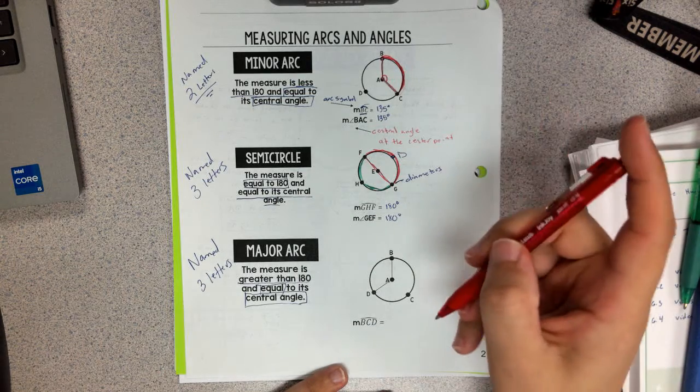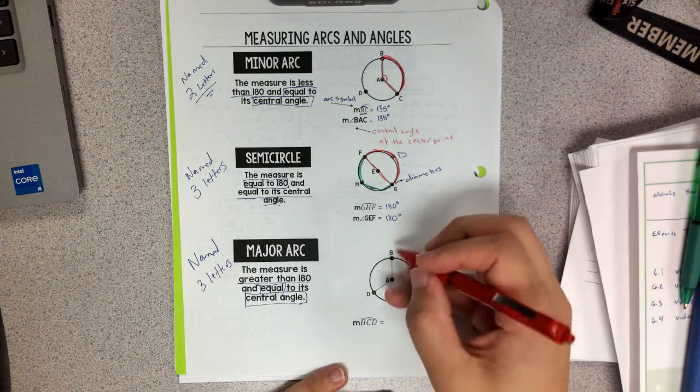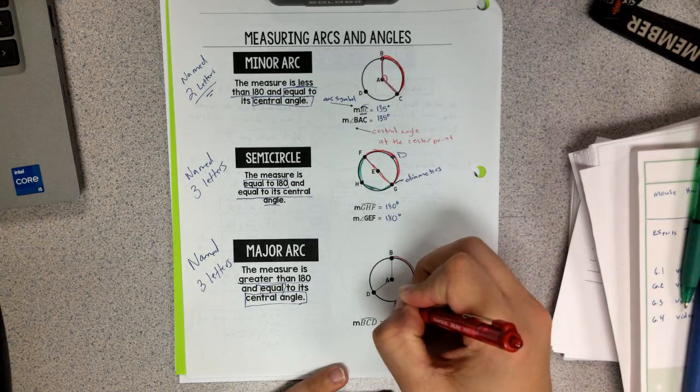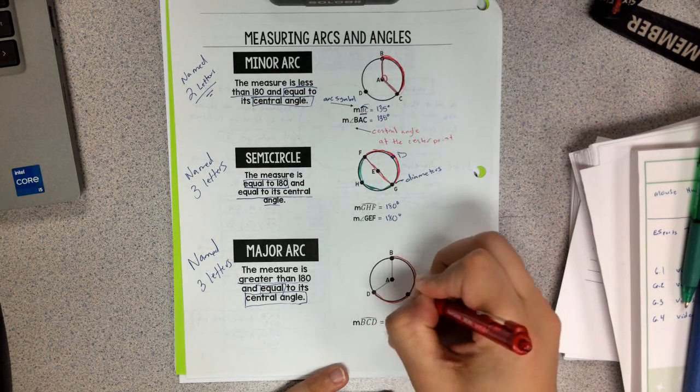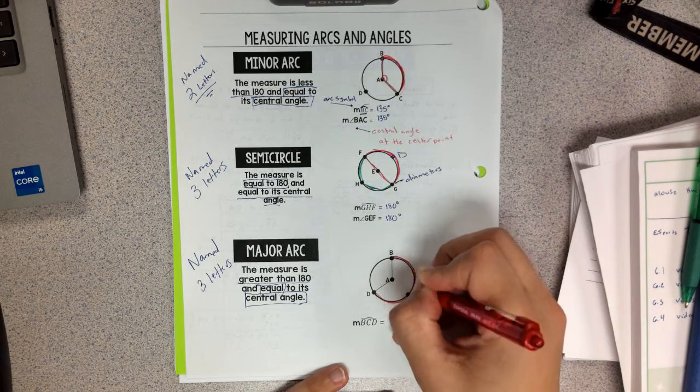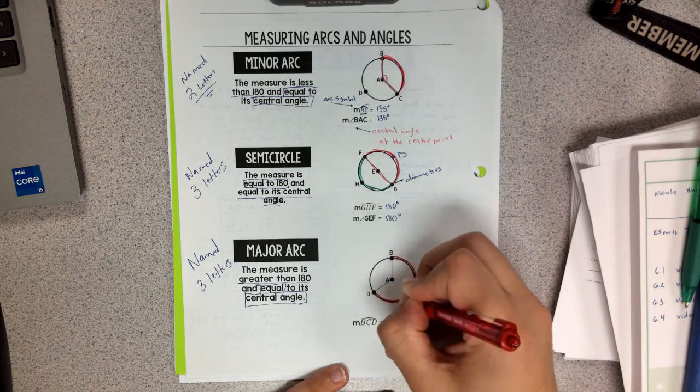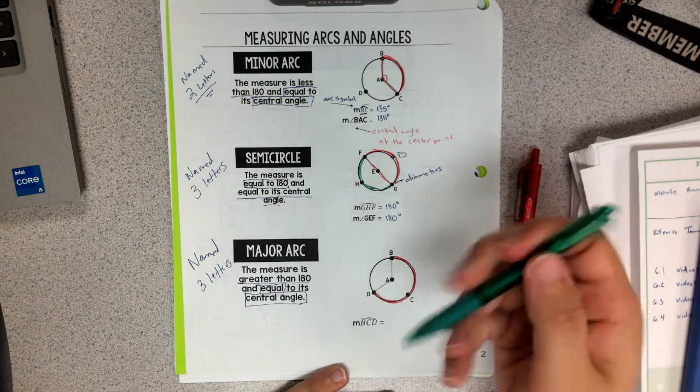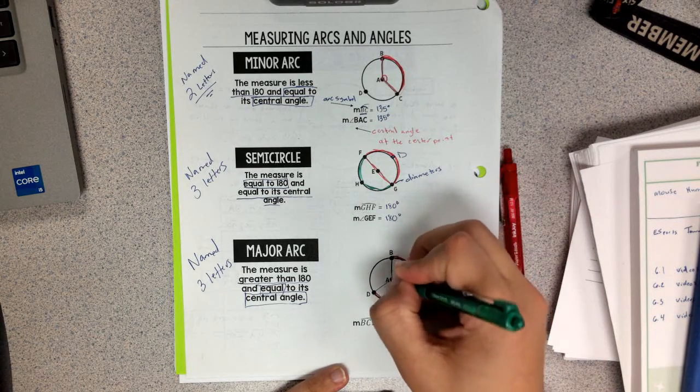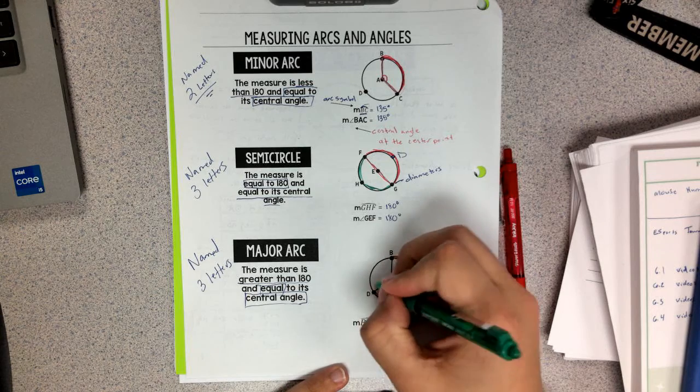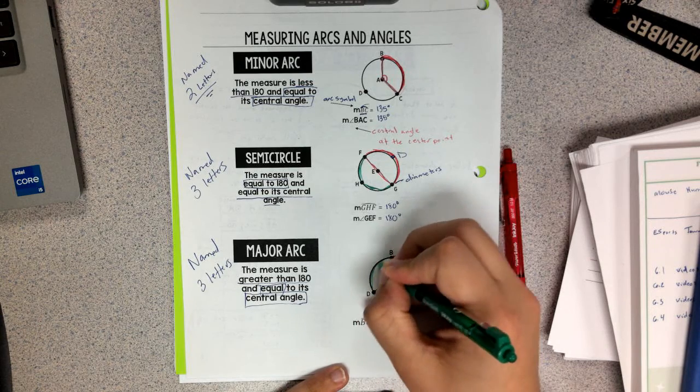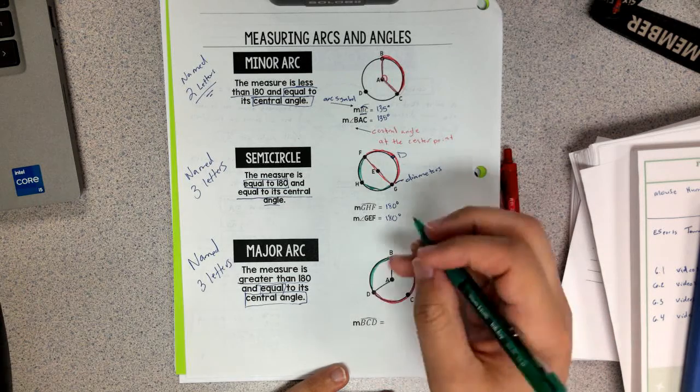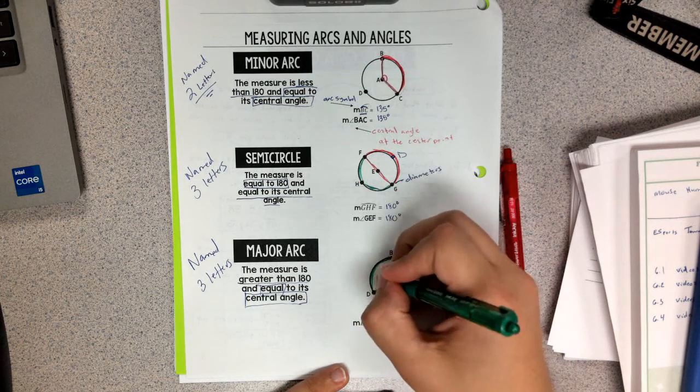So if we take a look at this, we have arc B, and I follow the curve to C, and then D. Notice that this arc is definitely greater than 180. And if we use the information from the previous problem, or the minor arc, then we know that the minor arc BD was 135.